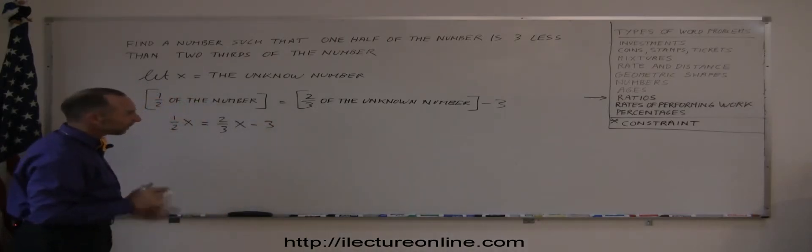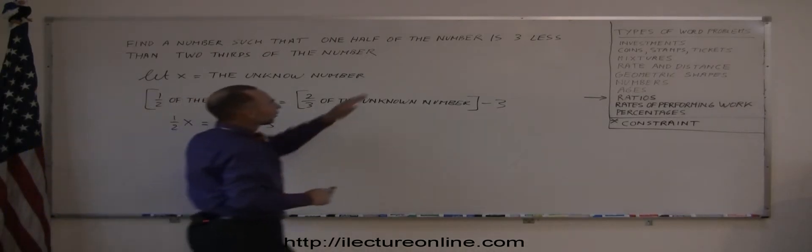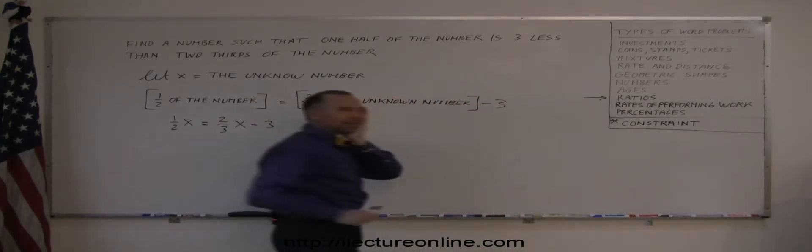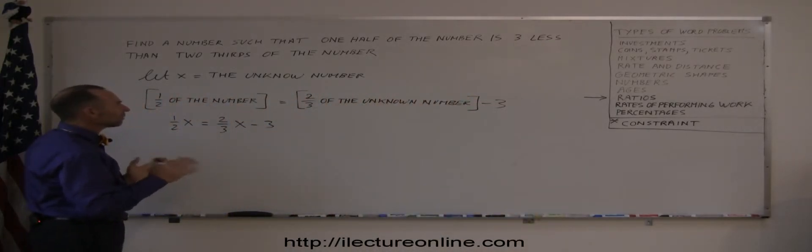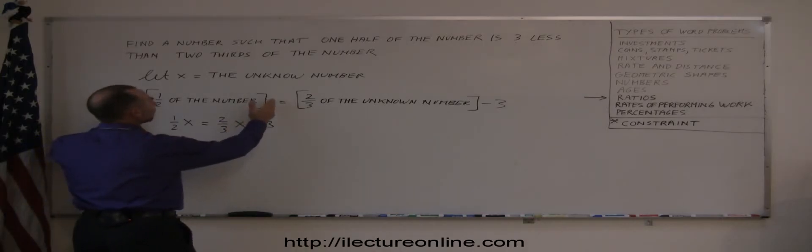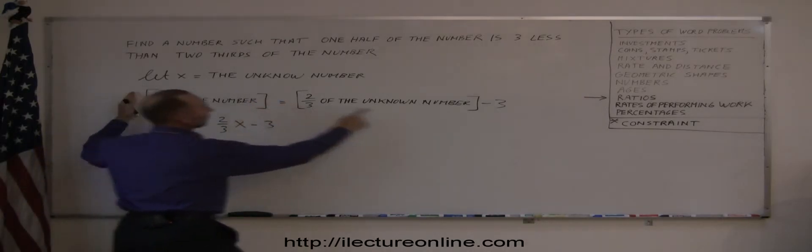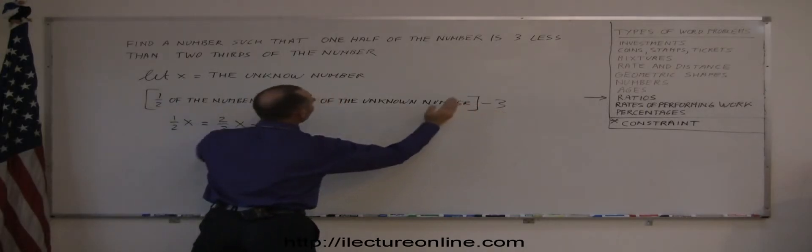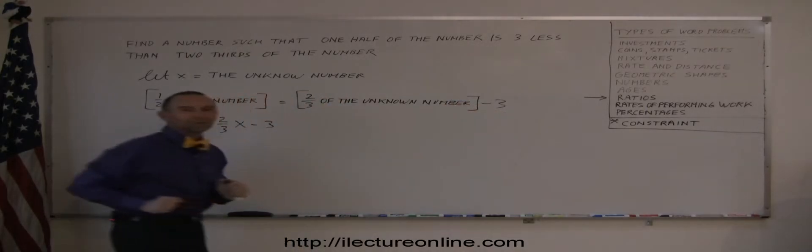This is where you have to be a little bit careful. Whenever they say, is three less than something else, how do you put that into your equation? And so you have to be very careful. So if you read it carefully this way, one-half of the number is three less than two-thirds of the number.